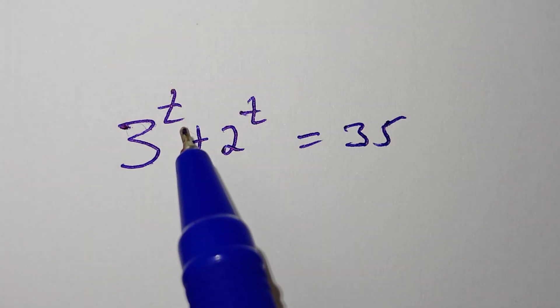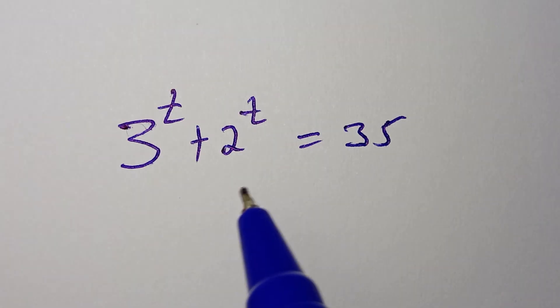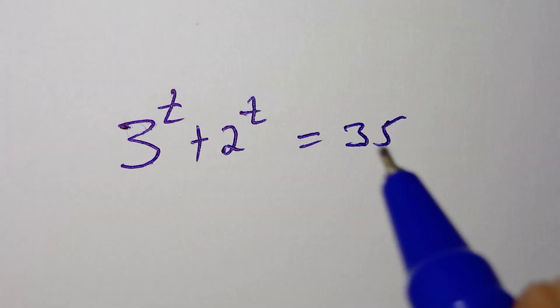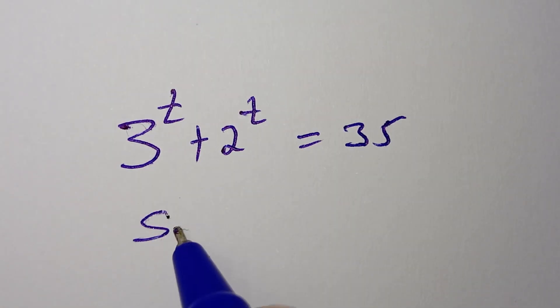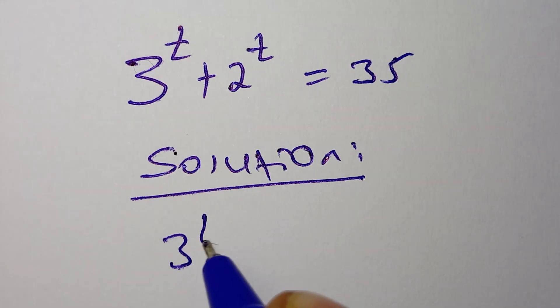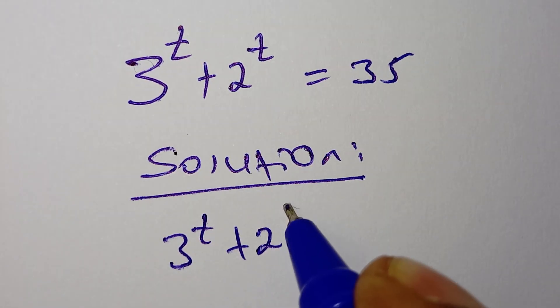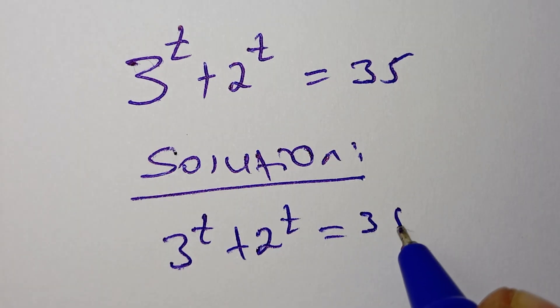Hi everybody. How to solve this? 3 to the power of t plus 2 to the power of t is equal to 35. So the solution: 3 to the power of t plus 2 to the power of t is equal to 35.